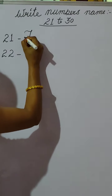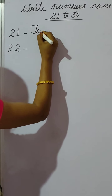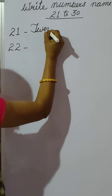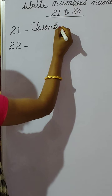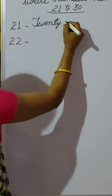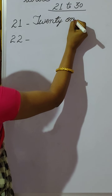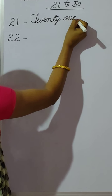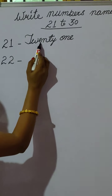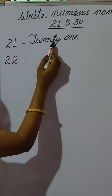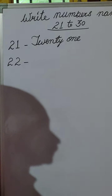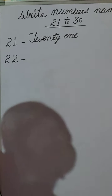The spelling of 20 is T, W, E, N, T, Y. For 21, we write ONE after TWENTY. So 21 is T, W, E, N, T, Y — 20 — then O, N, E — 1. TWENTY-ONE. 21.